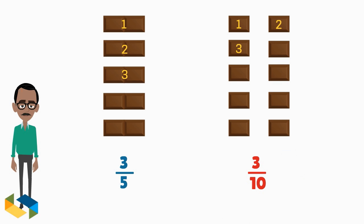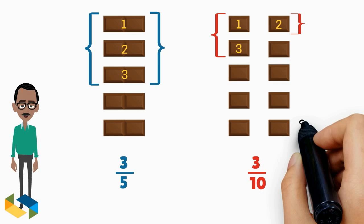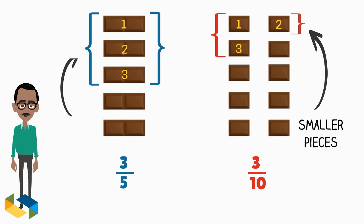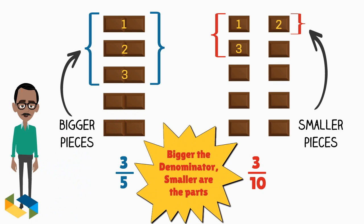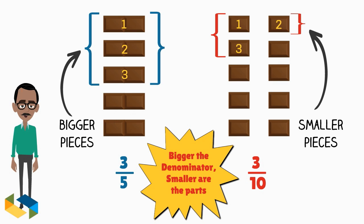As you can clearly see, these 3 parts on the left are bigger than the 3 parts here on the right. The reason is simple. We divided the chocolate bar on the right into much smaller pieces as compared to the one on the left. The bigger the denominator, the smaller are the parts.